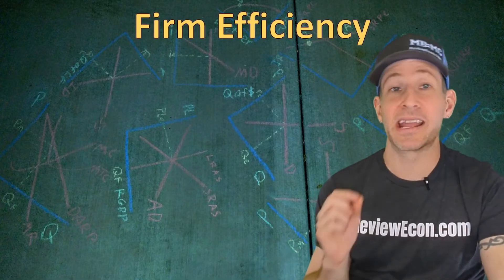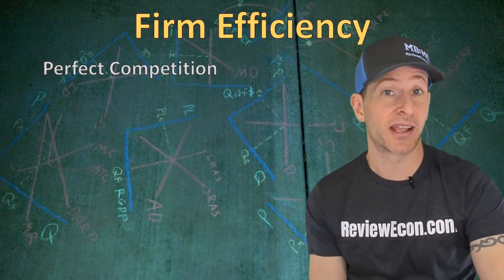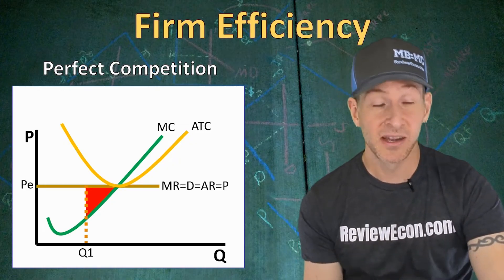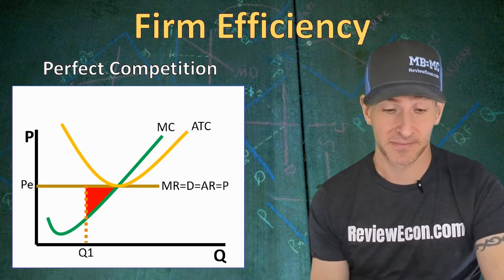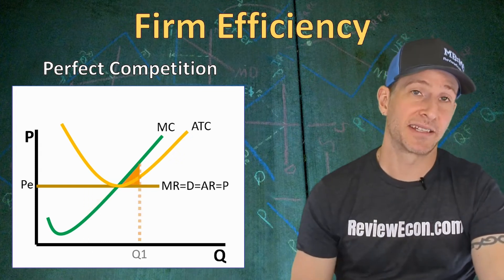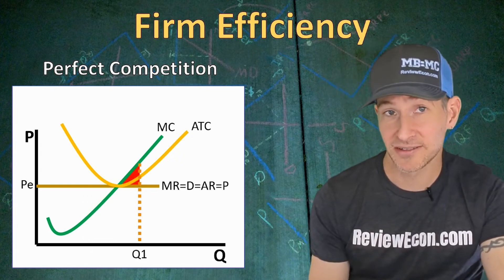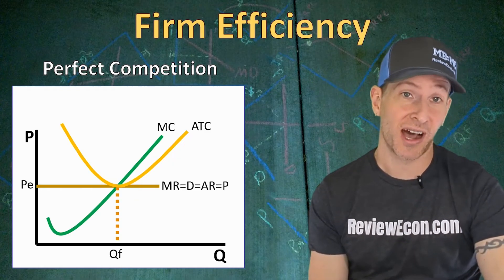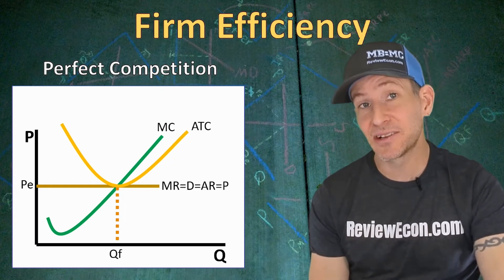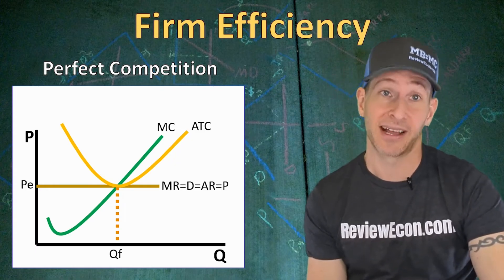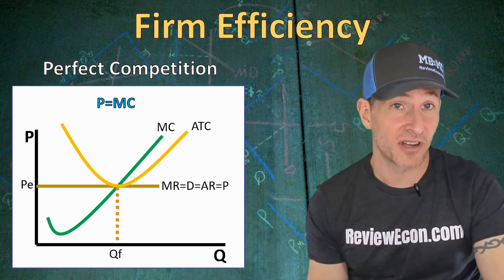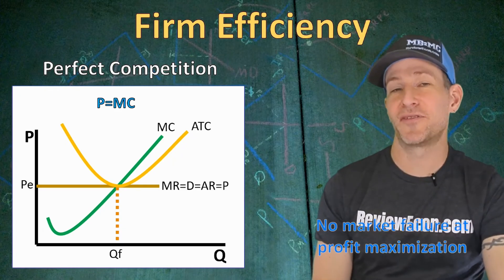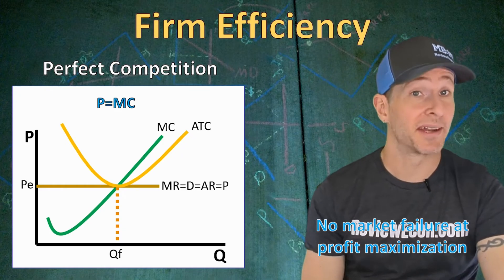Next, let's take a look at efficiency for individual firms, starting with perfectly competitive firms. If this firm produces less than the profit-maximizing quantity where MR equals MC, we will have that red triangle of deadweight loss. If they produce more than the profit-maximizing quantity, we will also have a triangle of deadweight loss. But when this firm profit maximizes, they produce where MC — which is the marginal social cost when there are no externalities — equals the demand curve, which is the marginal social benefit. We usually say price equals marginal cost when a perfectly competitive firm is allocatively efficient or socially optimal. So there is no market failure for a perfectly competitive firm that is profit maximizing.